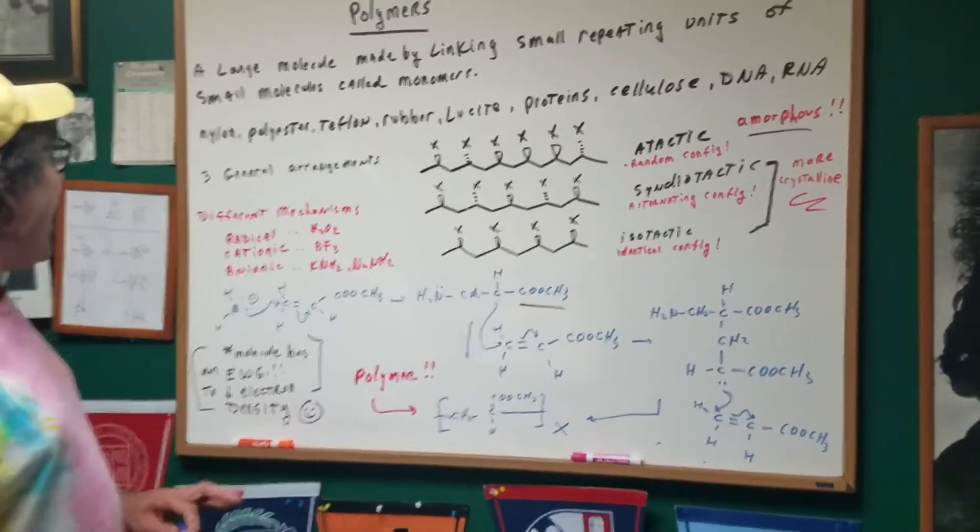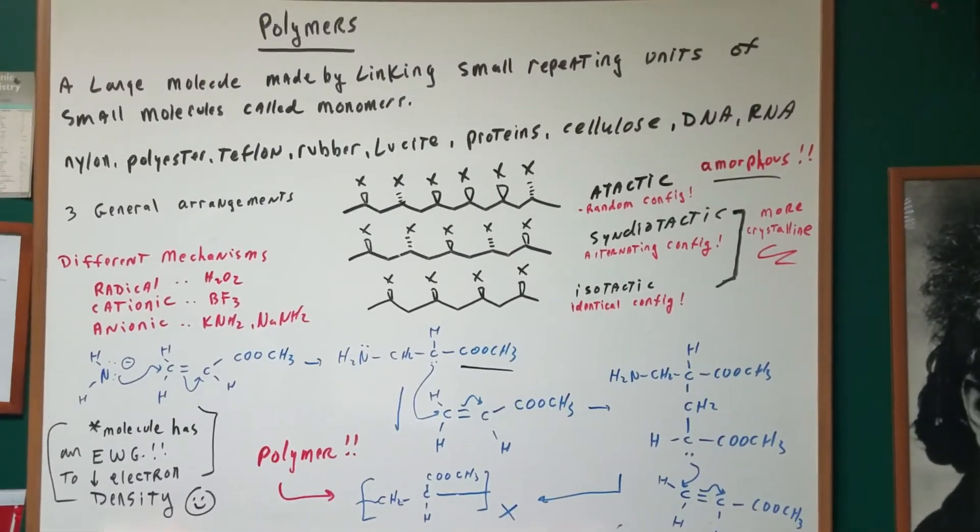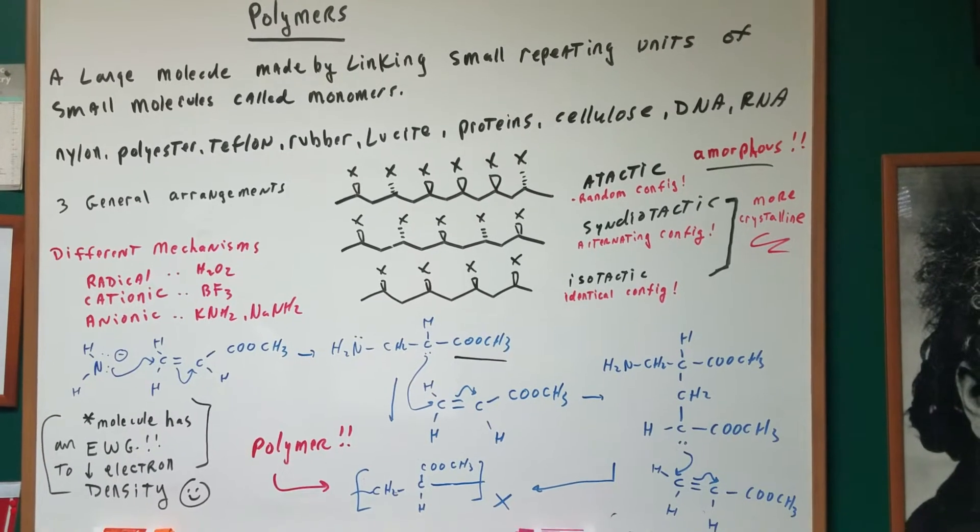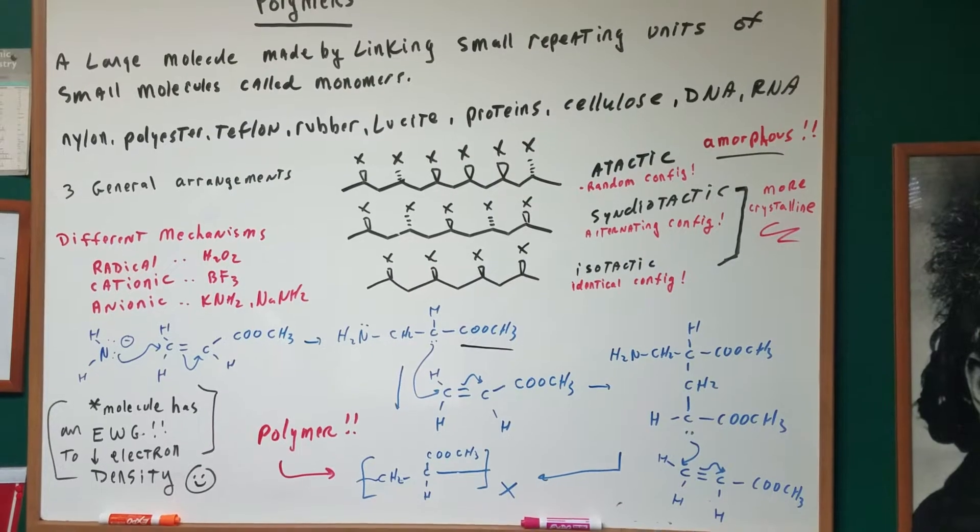Let's have a look. Polymers represent a large molecule made by linking of small repeating units of small molecules called monomers. For example, a whole bunch of glucose monomers could be put together to make cellulose.